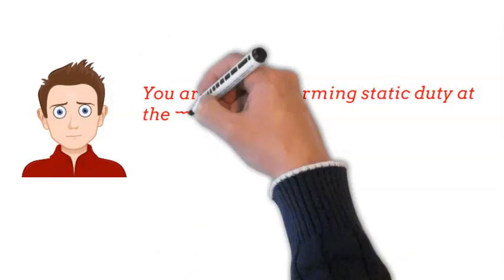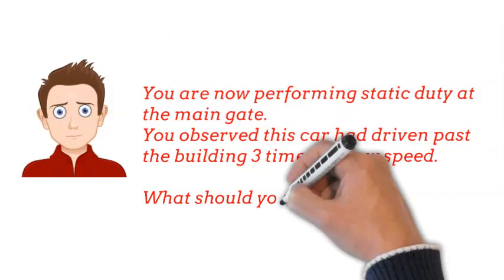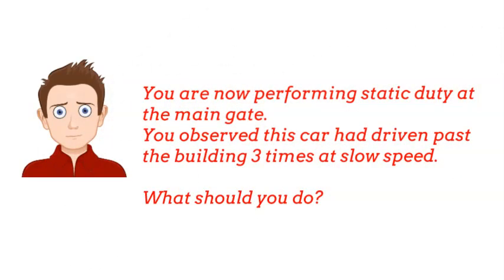You are now performing static duty at the main gate. You observed that this car had driven past the building three times at slow speed. What should you do?